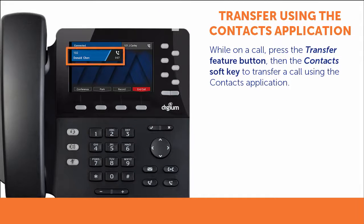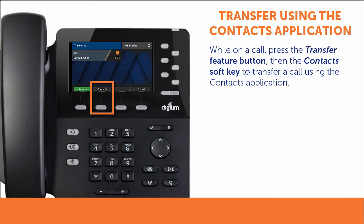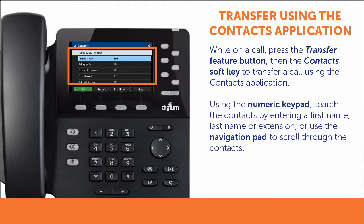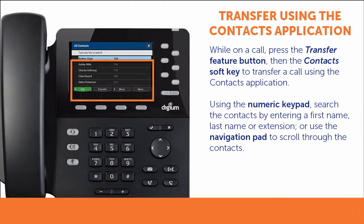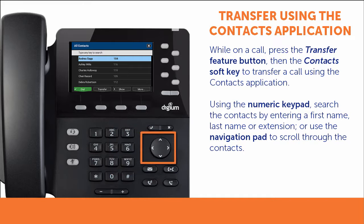While on a call, press the Transfer button, then press the Contacts soft key. Search through your contacts using the keypad, entering a first name, last name, or extension number. Or you can scroll up and down using the navigation pad to find the contact.